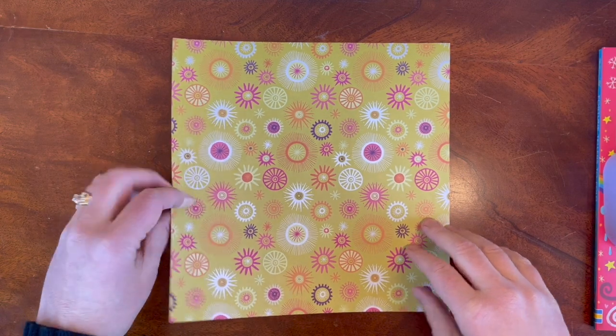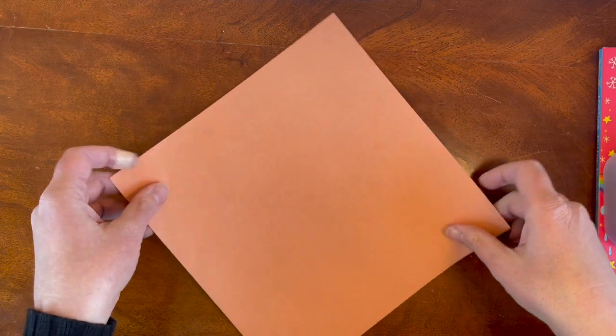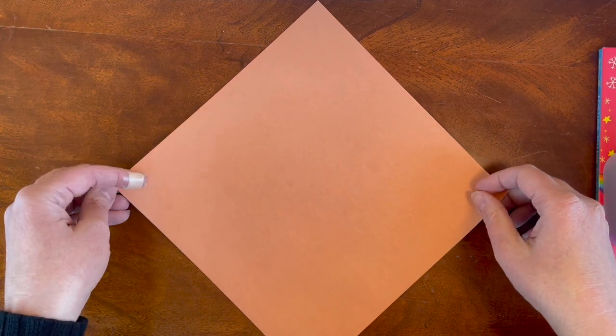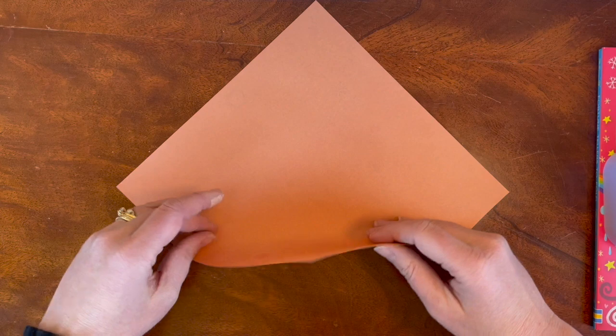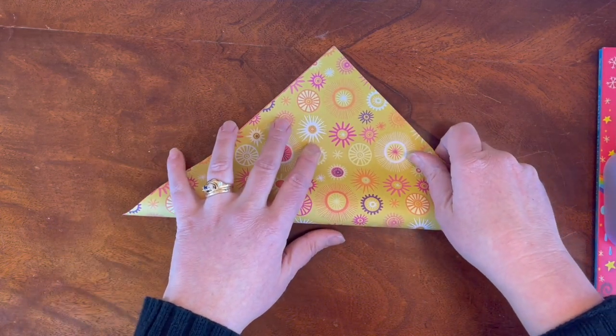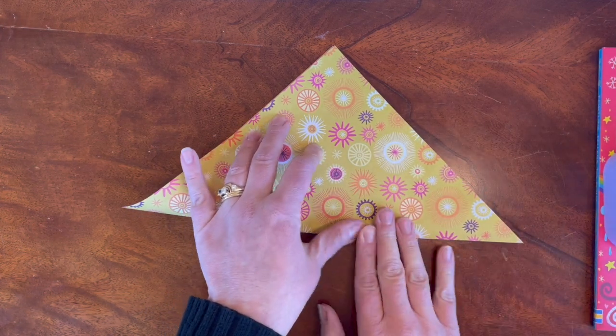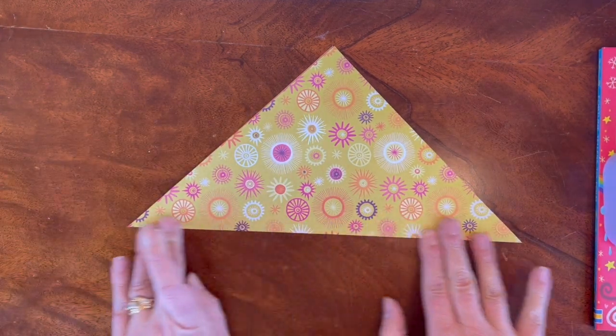To make the fox, you're going to turn your paper over so the plain side is up, and then turn it so it's a diamond with respect to you. Then fold the bottom point up to the top, lining up the edges and creasing along the fold line.